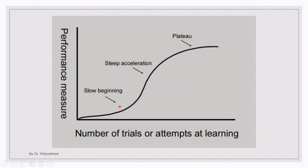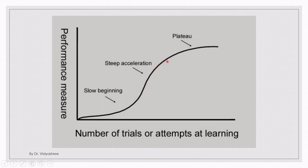In the slow beginning phase, when an employee is performing a task for the first time and producing the product for the first time, he starts learning how to manufacture it. The time taken will be more, so learning is occurring but performance is slow. After he starts learning, he gains more knowledge, and the learning curve becomes steep — performance increases rapidly.